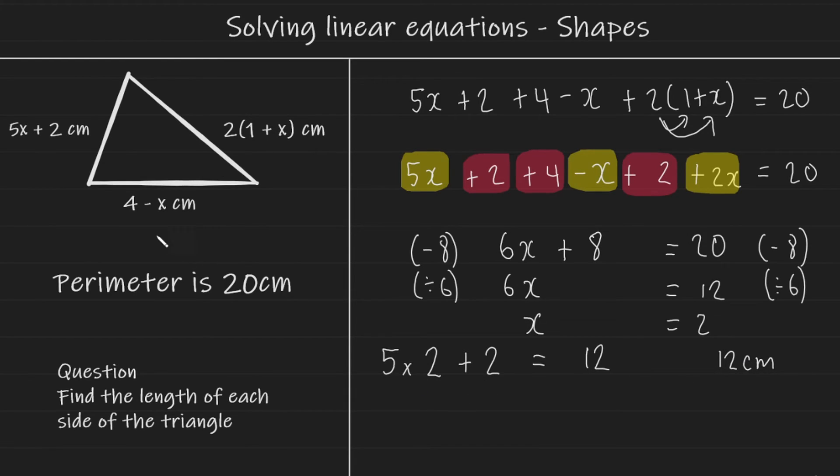And we can do this with the bottom side of the triangle, which is 4 minus x. And instead of x, I'm going to write 2 again. So this leaves us with 2. So the bottom hand side of the triangle is 2 centimeters.